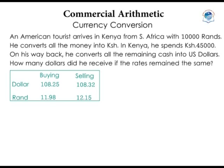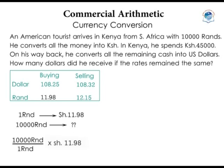Example: An American tourist arrives in Kenya from South Africa with 10,000 South African rands. He converts all the money into Kenya shillings at the airport. While in Kenya, he spends 45,000 shillings. On his way back, he converts all the remaining cash into U.S. dollars. How many dollars did he receive, assuming the rates were the same on both occasions? He arrives with South African rands and wants Kenya shillings, so he will sell the rands — meaning the bank will buy his rands at 11.98 shillings per rand. So, 10,000 rands × 11.98 = 119,800 shillings.